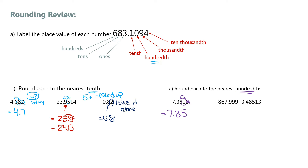The next one: 867.999, round to the nearest hundredth. This is my hundredths spot, and the digit beside it tells me to round up. Nine tells me I have to round that digit up — I had 0.99, which goes to 0.100, causing a chain reaction. The answer is 868.00. I'm still putting two decimal places because the question said nearest hundredth.